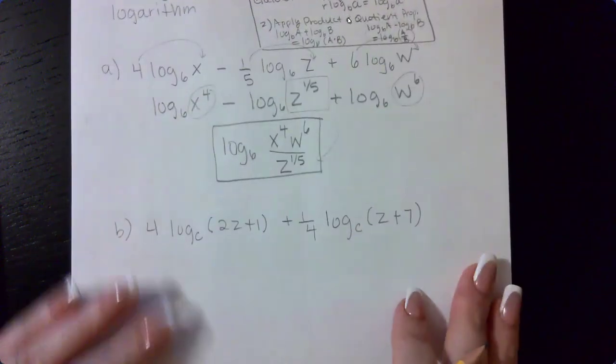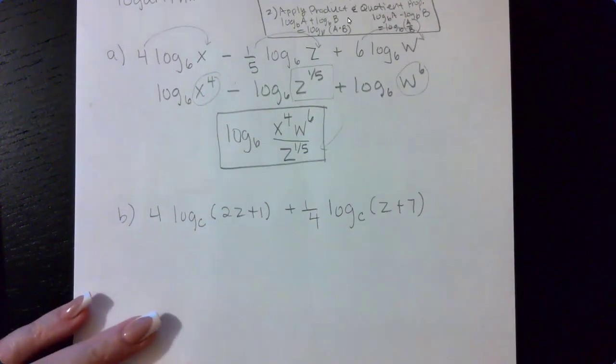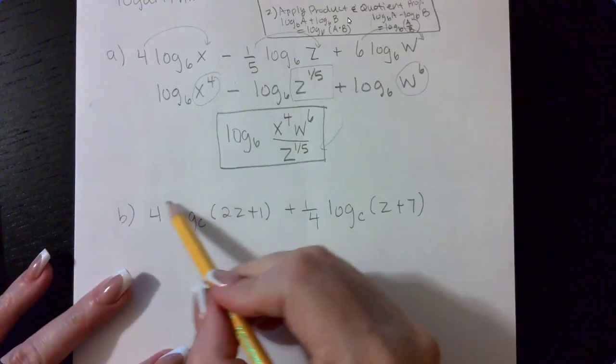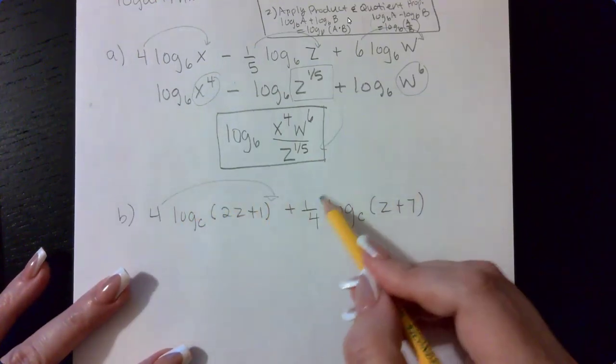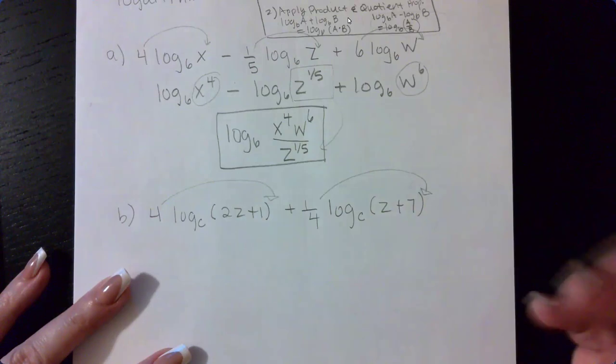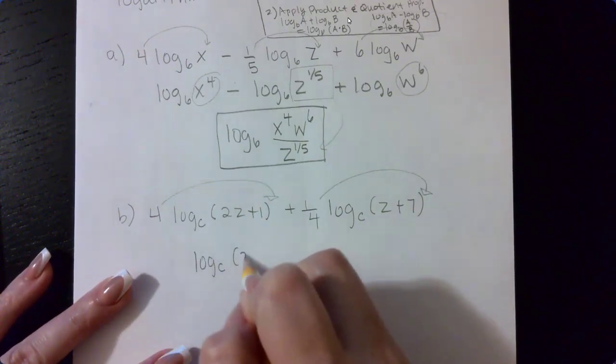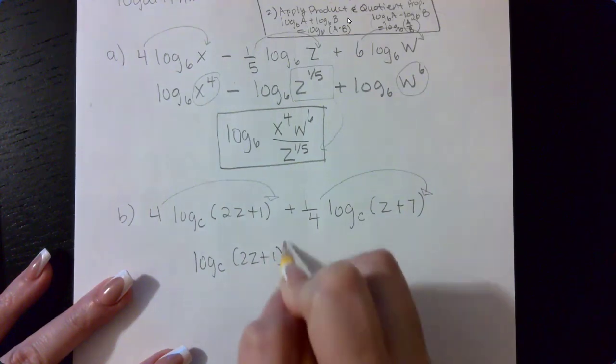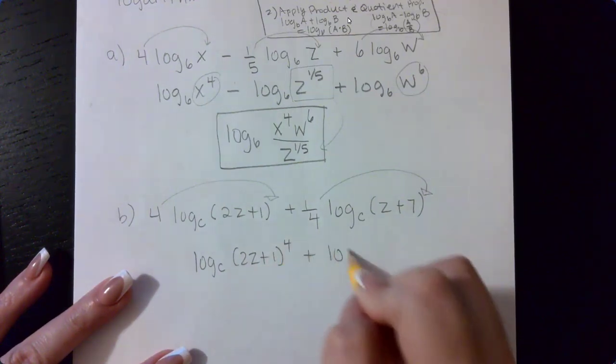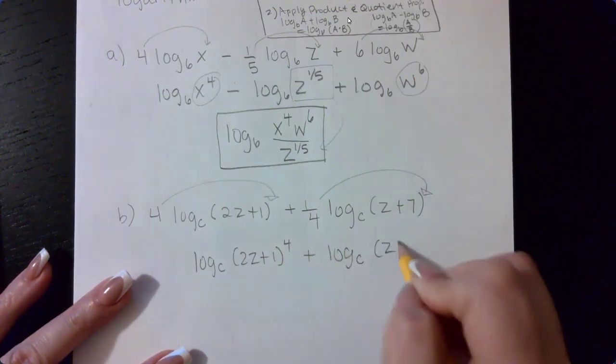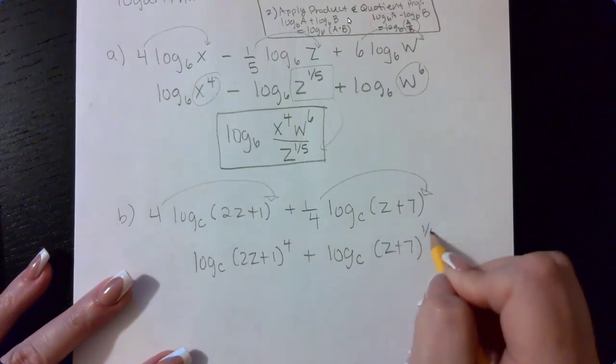So for the second example, we're doing the same steps. We're taking this coefficient and applying it as an exponent, this coefficient and applying it as an exponent. So we have log base c of 2z plus 1 to the 4th power plus log base c of z plus 7 raised to the 1/4 power.